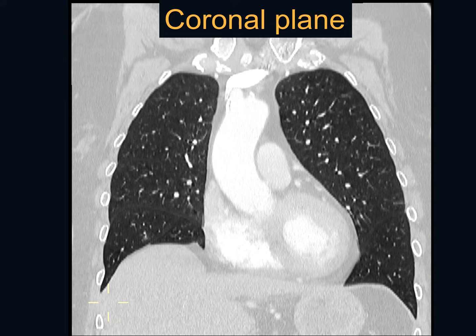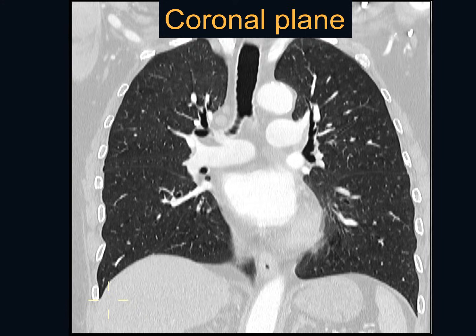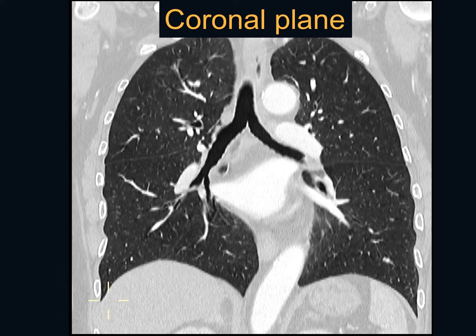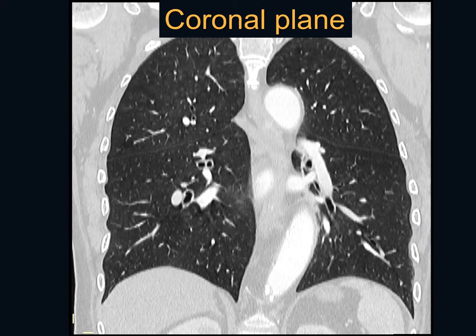In a final coronal reformat — a frontal view of the patient — we can see the major fissures on both sides with their oblique orientation and the boundaries of each lobe: three lobes on the right and two on the left. This view also shows the trachea bifurcating into the main stem bronchi, the bronchus intermedius on the right, and the most posterior aspect of the major fissures.